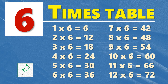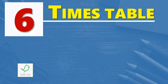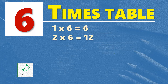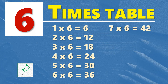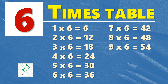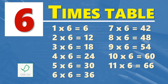Multiplication table of six. Six times table. One times six is six, two times six is twelve, three times six is eighteen, four times six is twenty-four, five times six is thirty, six times six is thirty-six, seven times six is forty-two, eight times six is forty-eight, nine times six is fifty-four, ten times six is sixty, eleven times six is sixty-six, twelve times six is seventy-two.